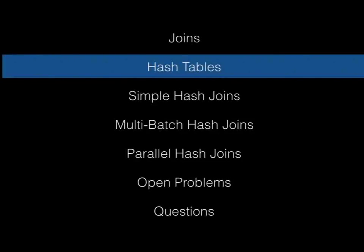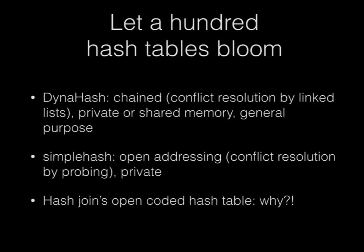I'm going to talk a little bit about hash tables as they exist in Postgres. There are at least three hash table implementations inside Postgres. There's the Dynhash, which is a general-purpose hash table used in backend local memory in some cases and in shared memory in others. That's a chaining hash table, meaning there's a linked list of pointers for conflict resolution. Then there's simplehash, which Andres Freund added in the most recent release, which is an open addressing system with a different conflict resolution mechanism. And then the hash join operator has its own hash table implementation.